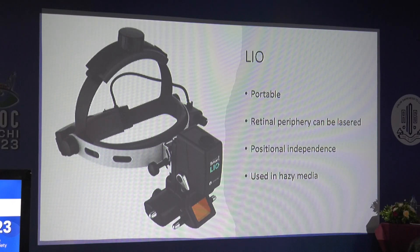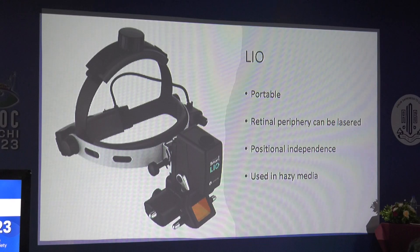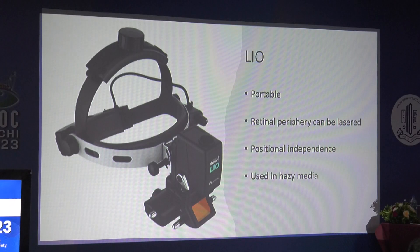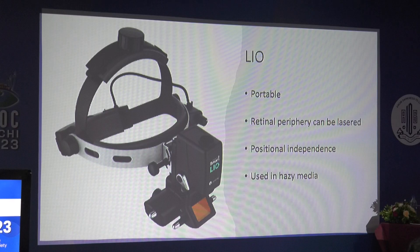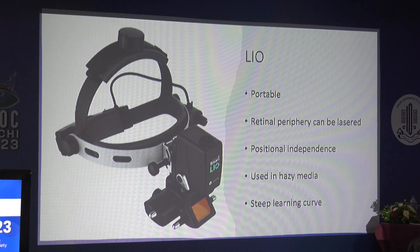For pan-retinal photocoagulation, LIO — laser indirect ophthalmoscope — is mostly used where there is hazy media, especially in dense cataracts or when there is already some vitreous hemorrhage. In those cases you won't be able to finish your laser with conventional single spot or Pascal. Then you need to bring in the LIO. It has a steep learning curve and is specifically for conditions with hazy media.